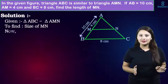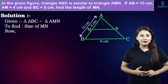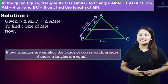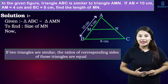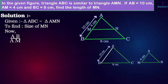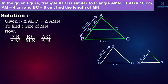Now we can use the property of similar triangles. If two triangles are similar, the ratios of corresponding sides of those triangles are equal, so that AB by AM is equal to BC by MN, equals to AC by AN. Now to find MN, we take any of two fractions that include MN.